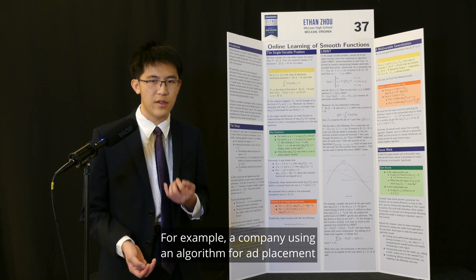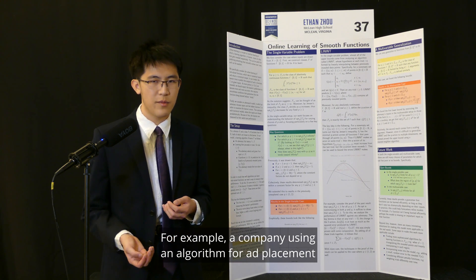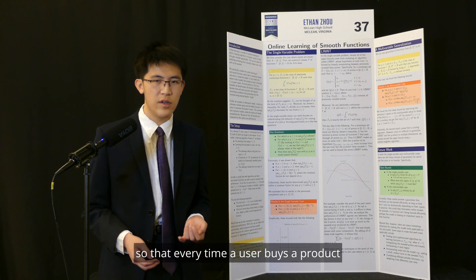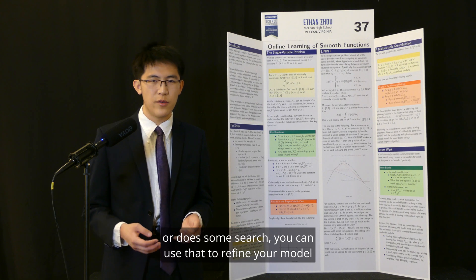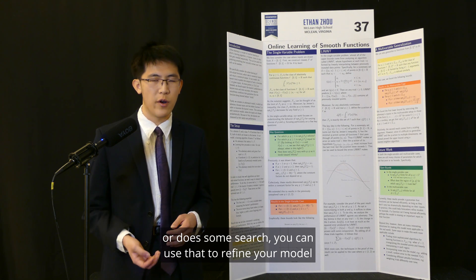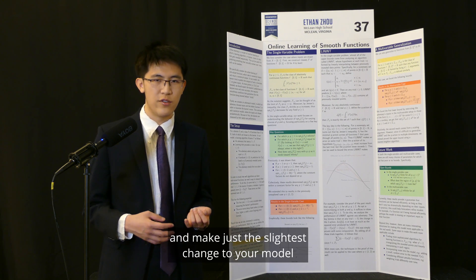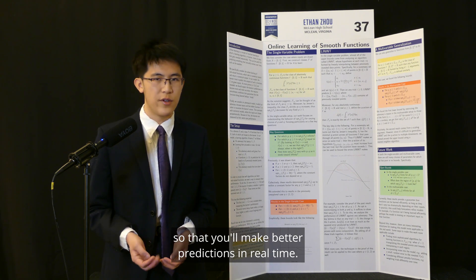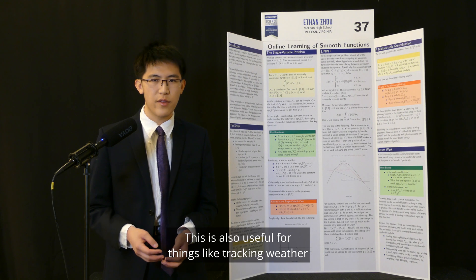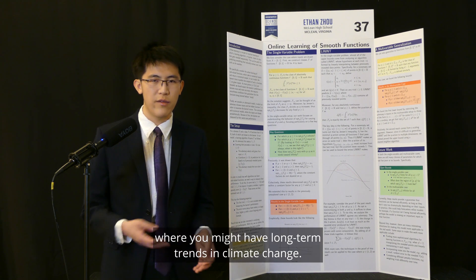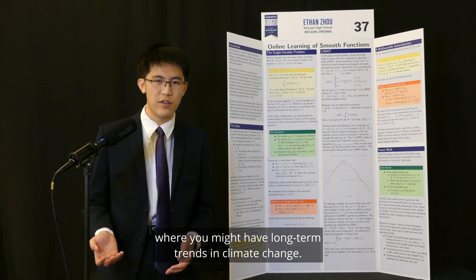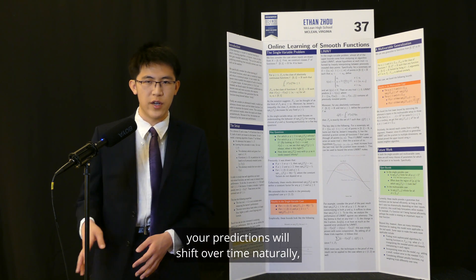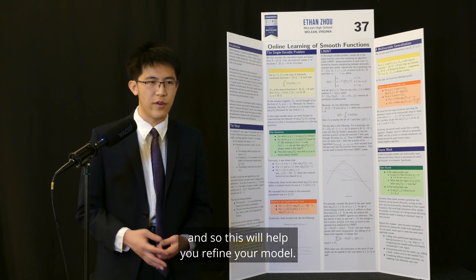For example, a company using an algorithm for ad placement might want to use online learning, so that every time a user buys a product or does some search, you can use that to refine your model and make just the slightest change so that you'll make better predictions in real time. This is also useful for things like tracking weather, where you might have long-term trends like climate change. In this case, your predictions will shift over time naturally, and so this will help you refine your model.